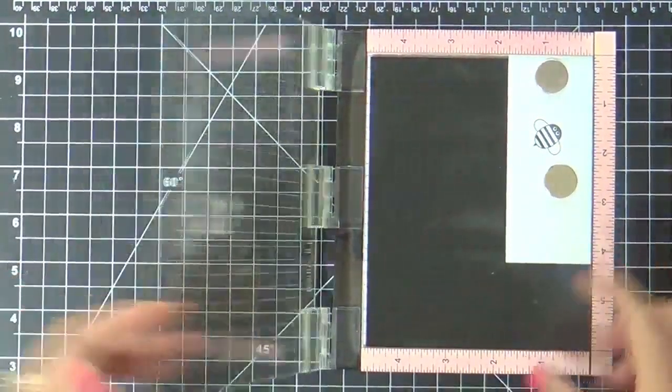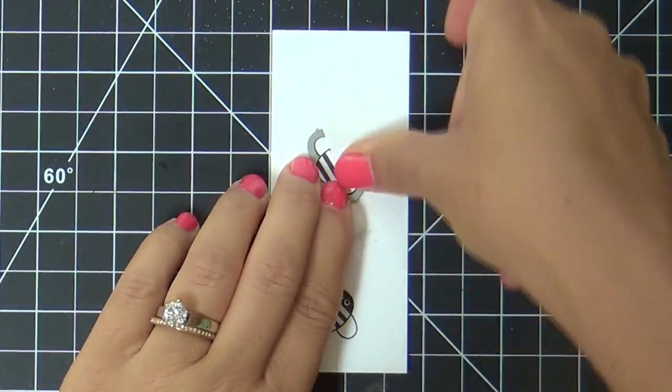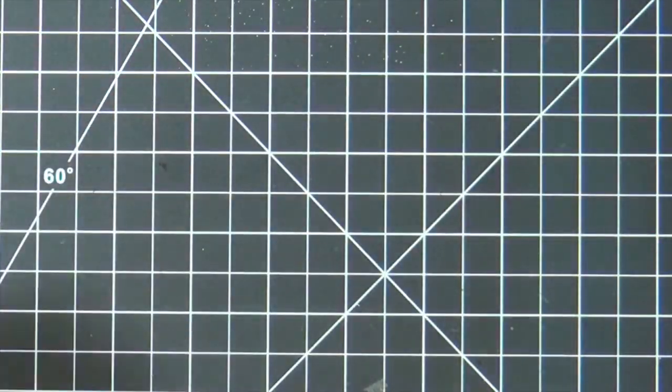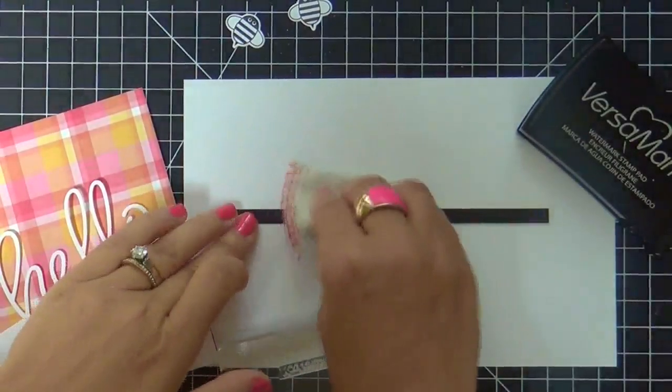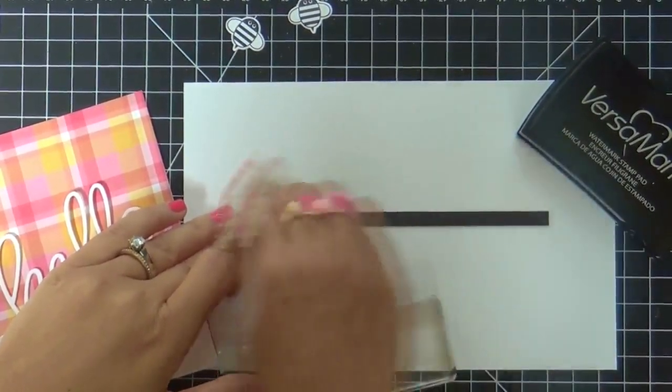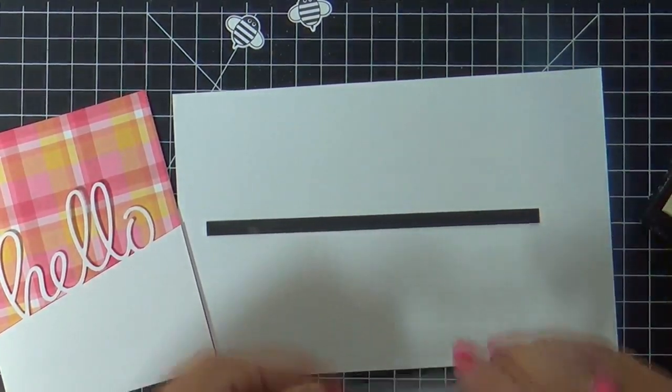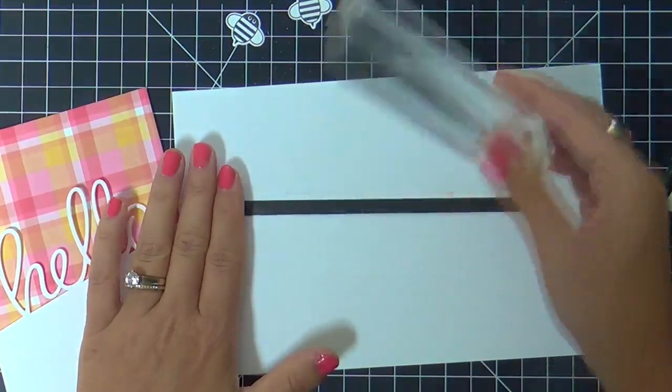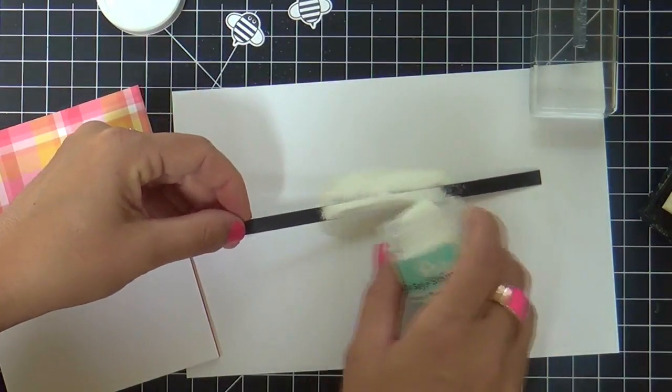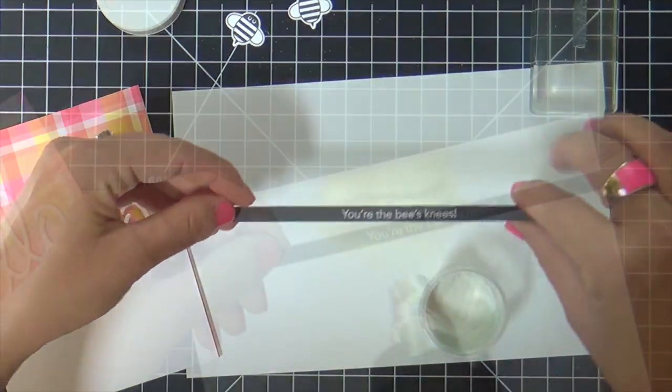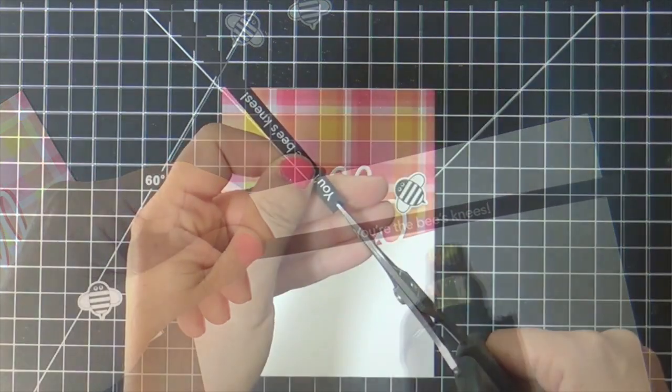So I stamped a couple of cutie patootie little bees from the Encouraging Animals stamp set and I die cut those out with the coordinating dies. I'm going to color those with Copics a little bit later, but first I'm going to stamp and emboss a coordinating sentiment also from the Encouraging Animals stamp set. It says you're the bees knees. I'm embossing that in white on a strip of black. I thought that would be so cute to go along with the bees.